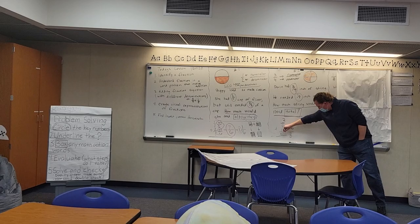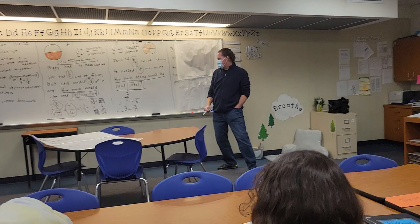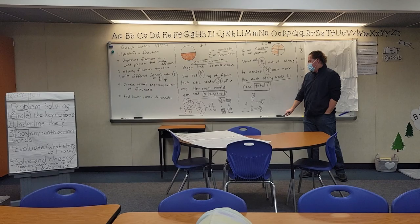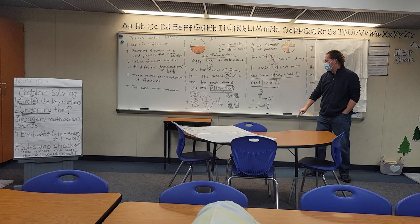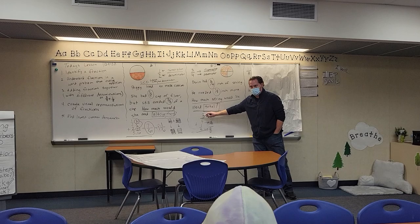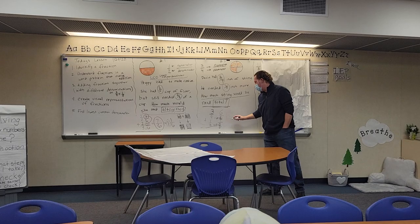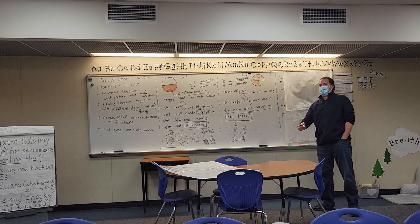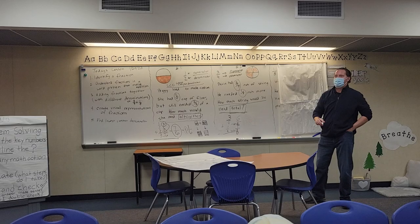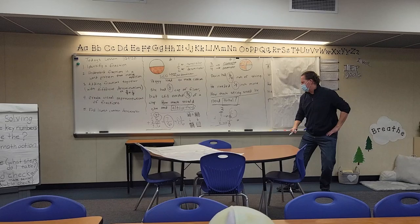Now let's carry out the procedure. Before I add, I have to divide the original denominator by the new denominator. Eight divided by four is two; two times three gives me six — so the first fraction becomes six over eight. For the second fraction: eight divided by eight is one; one times one is one — so that stays as one over eight. Now what's my last step? Add the numerators. When I do that, six plus one gives me seven over eight.